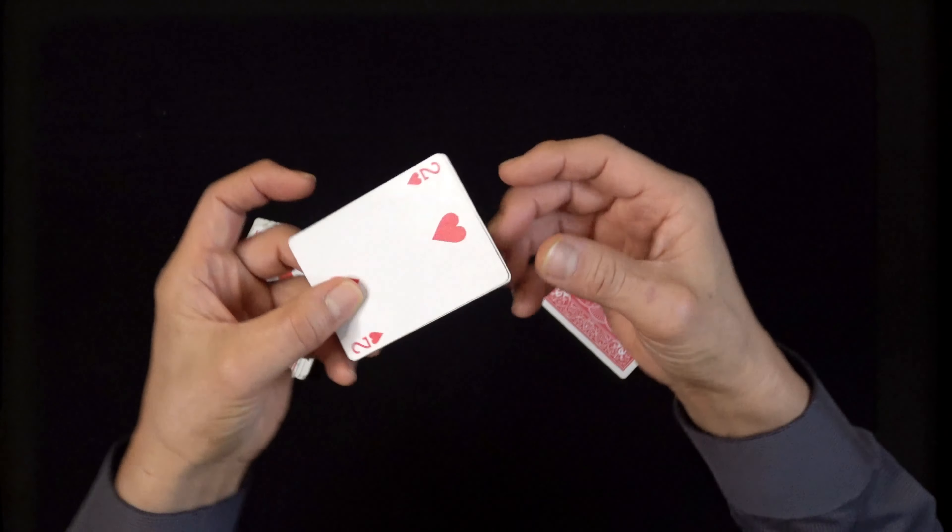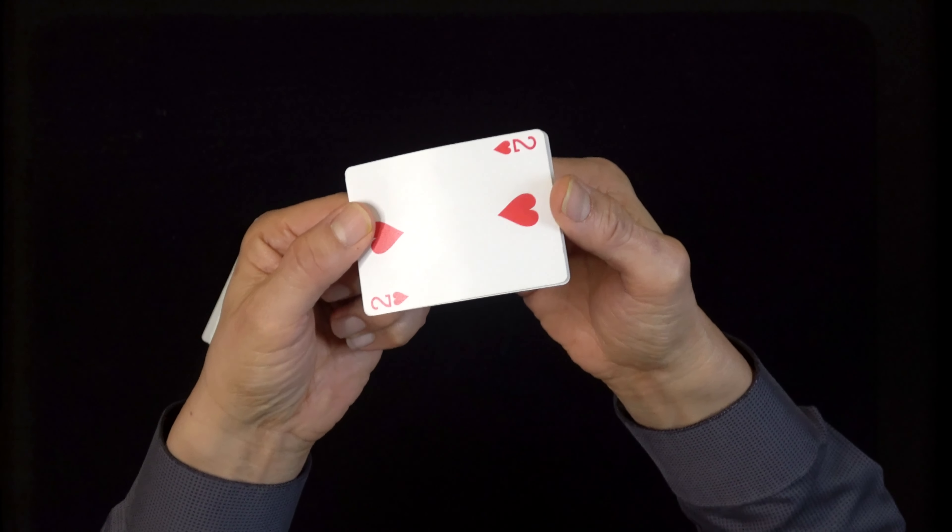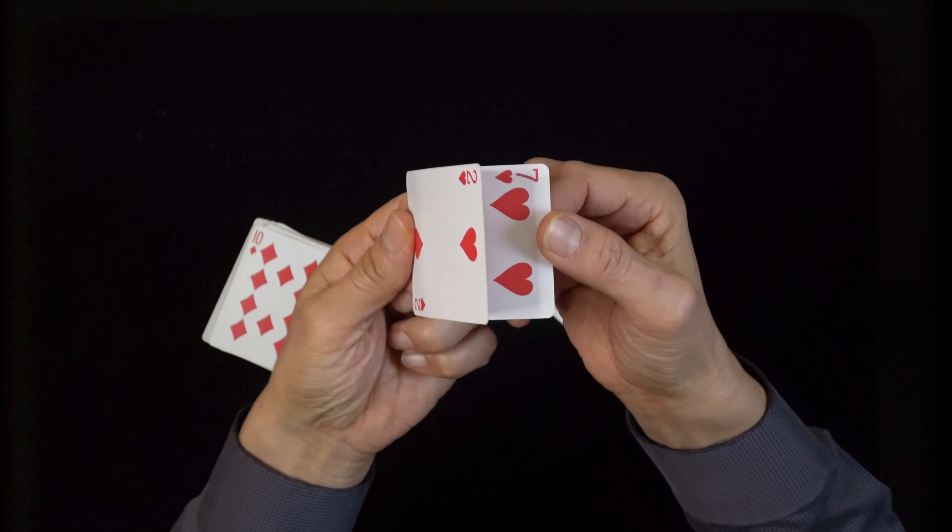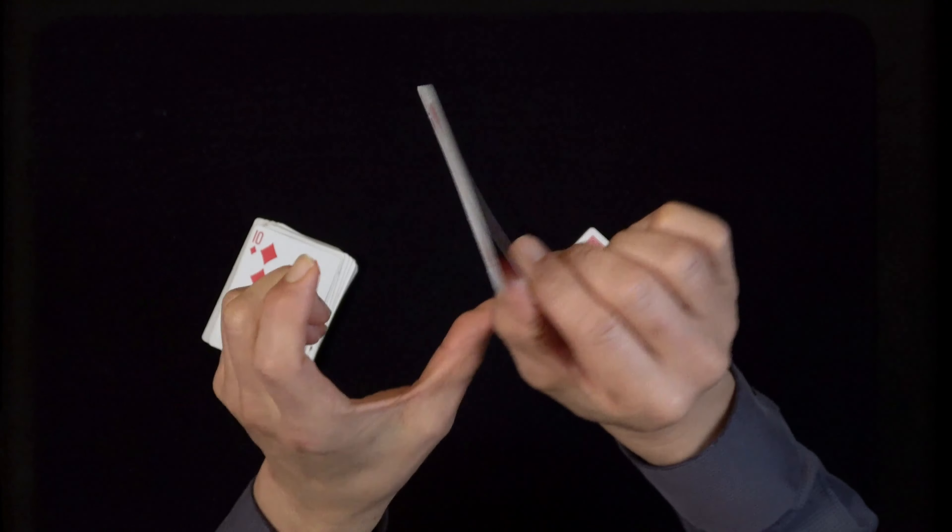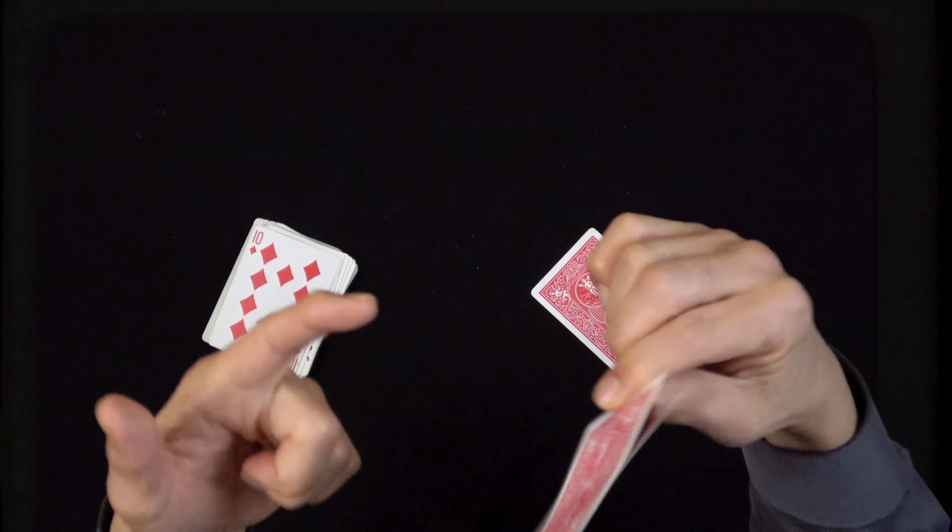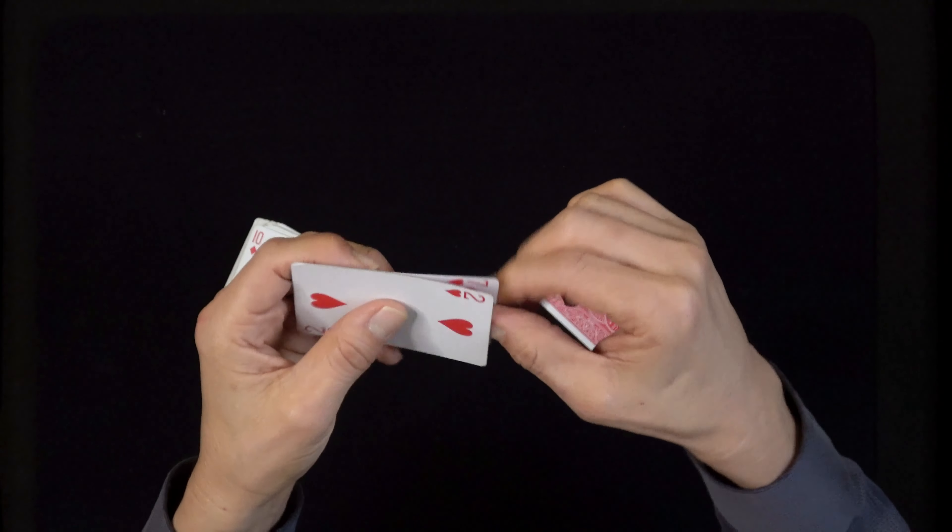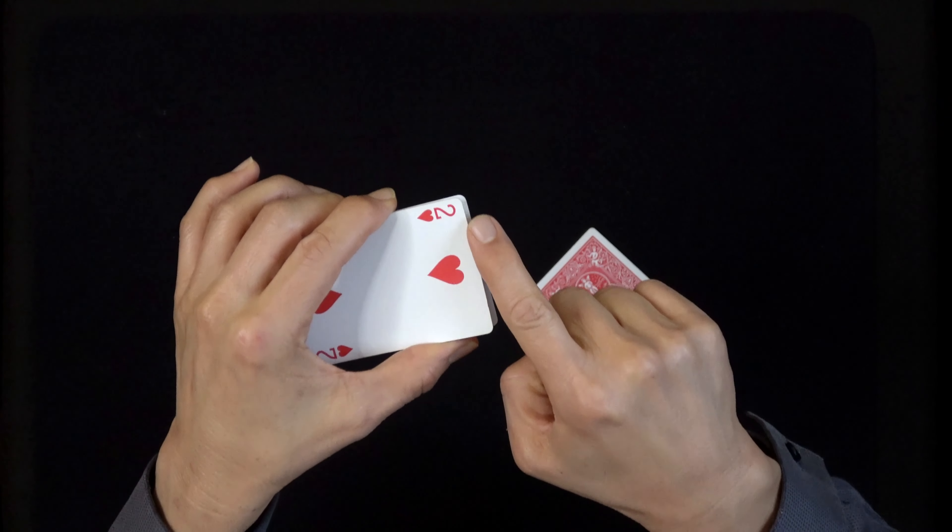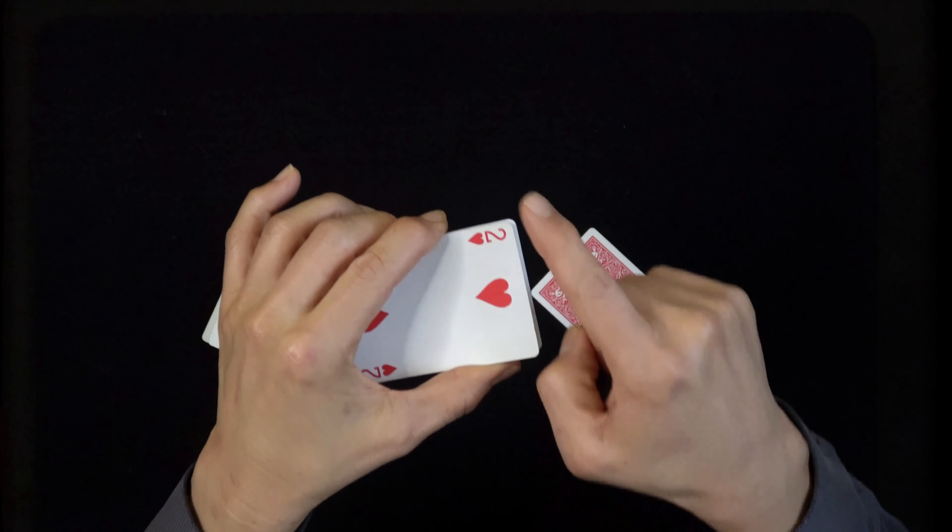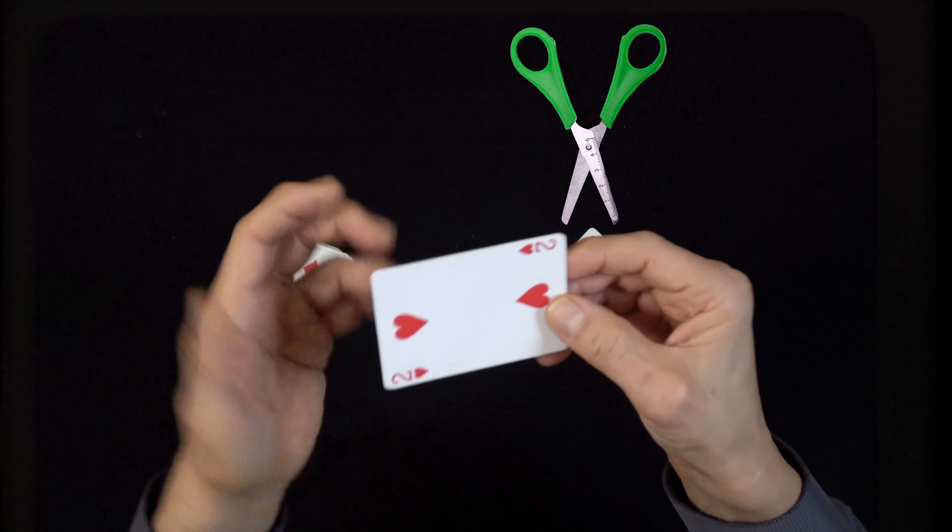Now first of all, let me talk about the gimmick. This card here is actually the gimmick. What I've done is there's two cards glued together here: two of hearts and the seven of hearts. See, these are glued together at the bottom.